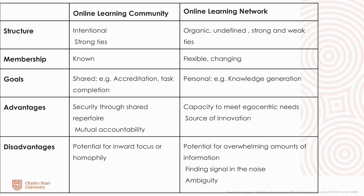Generally, a learning community is formed intentionally by a group of people who know each other. This means they have strong ties — they interact regularly, and there's a level of trust between them. Because most members of a community will know each other, when one shares something in the group, it's more likely to be reciprocated. The membership of the learning community is known, and there's generally a sense that everyone is working together towards a shared goal, such as the completion of a course or a task. The most obvious advantage is the sense of security, as members tend to have a shared language and shared goals, so they're more likely to be supportive of each other.